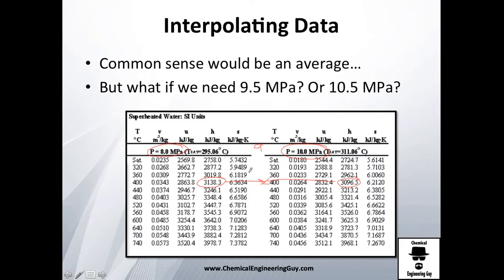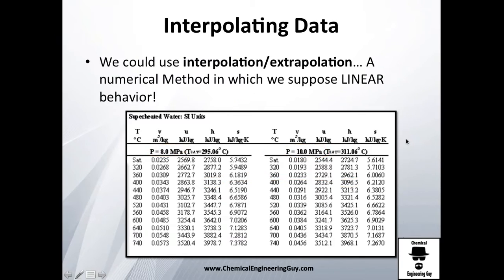You have this value here and you have this value here, and since the average of 8 and 10 will give you 9, it makes a lot of sense to make an average of this and this. Actually, it will be around 3120 or so. But what will be the problem if you are actually looking for 9.5 or even 10.5?